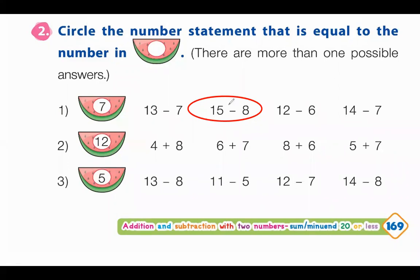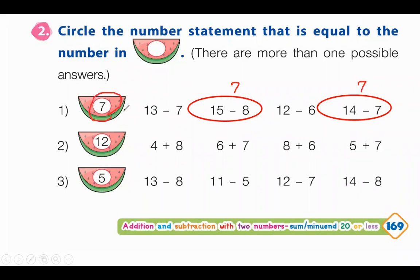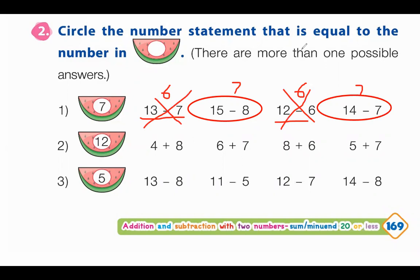Let's say number 1. We have 15 minus 8, that is 7. We also have 14 minus 7, which is also 7. So make sure the result is 7 — it should match. The other options only give 6, so they are not correct. You only have two correct answers for number 1.